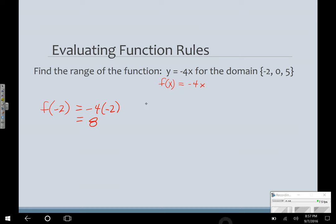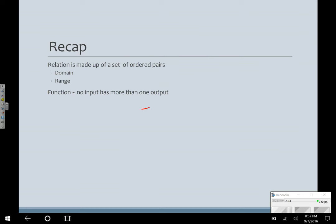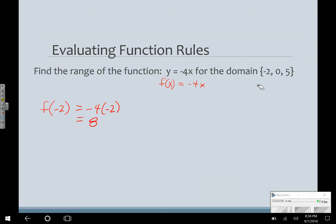I can substitute in. f(0) is equal to -4 times 0. -4 times 0 is 0. f(5) is equal to -4 times 5, which is -20.